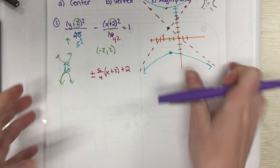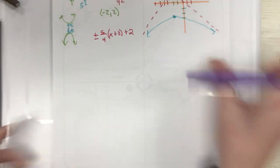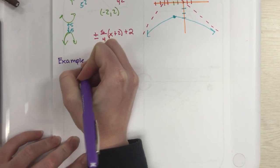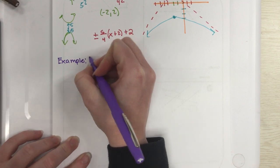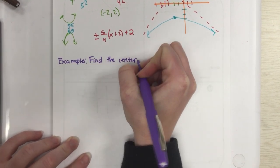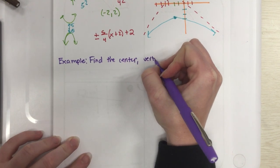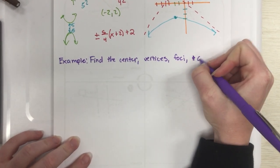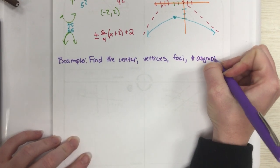All right, our next example is to go ahead and find just a bunch of stuff. So we are going to find the center, we will find the vertices, we will find the foci, and we will find asymptotes.